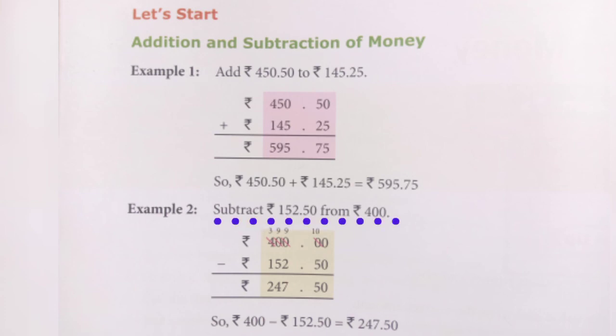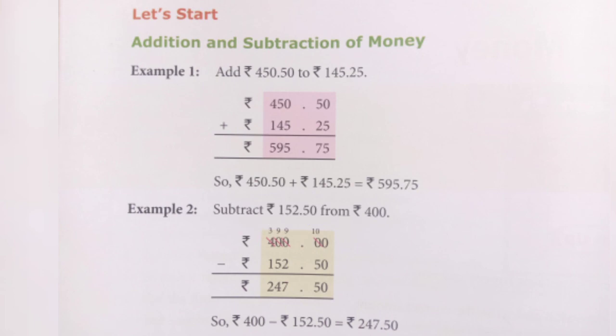We borrow 1 from the hundreds column (4), making 0 become 10. 10 minus 5 equals 5, so 50 paisa. Because we borrowed 1, the next digit becomes 9. 9 minus 2 is 7, and the next 9 minus 5 is 4. We borrowed 1 so that 4 becomes 3, and then the next column: 3 minus 1 is 2. Answer: 247 rupees and 50 paisa.